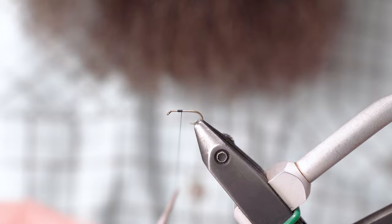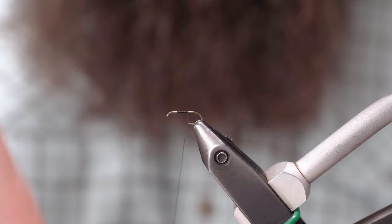Get our thread started right about two-thirds of the hook shank. Just real nice tight wraps. You really want this body to stay very slender.